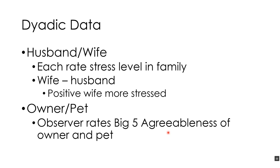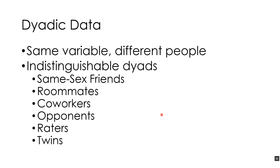You can either have dyad members make ratings themselves or have an observer rate each member. Indistinguishable dyads include same-sex friends, roommates, coworkers, opponents, raters, and twins — you don't know which is which, so you have to be arbitrary in deciding who comes first. Raters are an interesting subcategory because you can examine ratings that two people make of the same person.